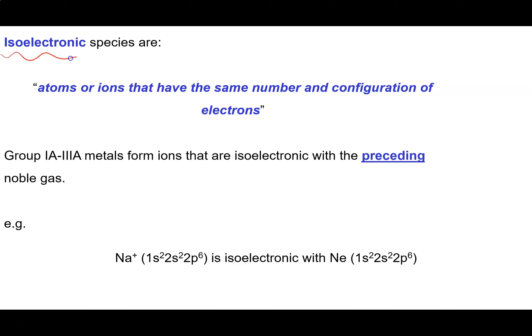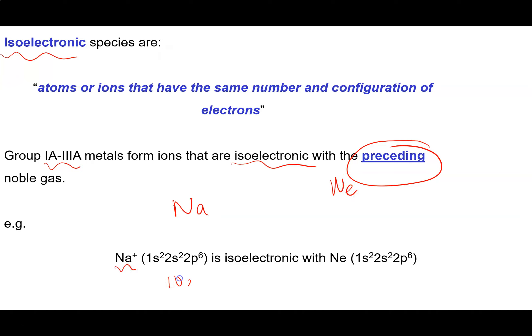We'll often use the term isoelectronic, which means two species have the same number and configuration of electrons. Group 1A through 3A metals form ions that are isoelectronic with the noble gas that comes before them. The noble gas that comes before sodium — which is in the row above — is neon, so the sodium ion with its 10 electrons is isoelectronic with neon, which also has 10 electrons in the same arrangement.